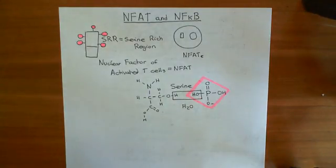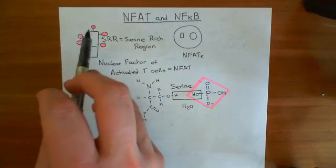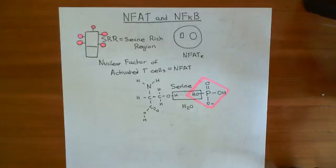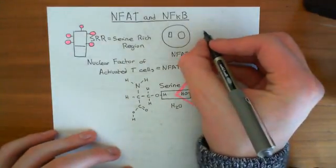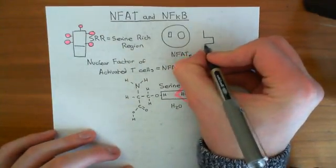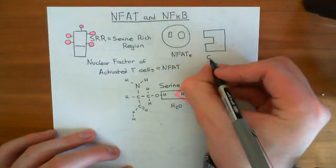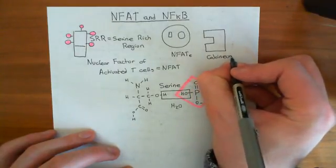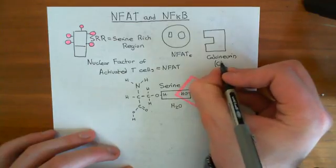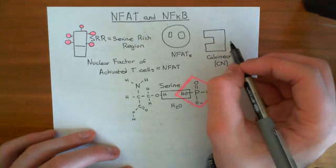When NFAT is in the cytoplasm in its inactive state, what's keeping it there is all these phosphate groups bound to the serine-rich region. There is an enzyme capable of removing those phosphate groups, and that enzyme is known as calcineurin, often denoted CN for short. Calcineurin is activated when calcium-calmodulin complexes come and bind to it.